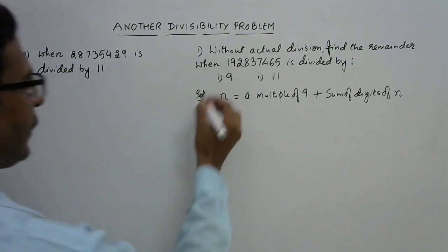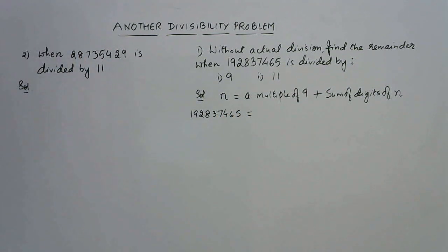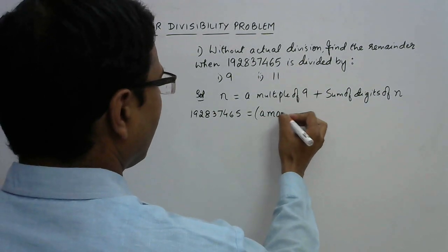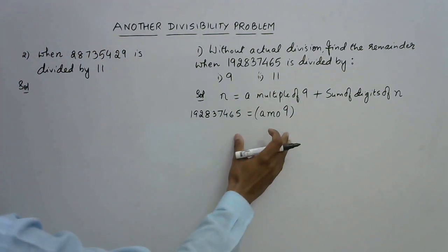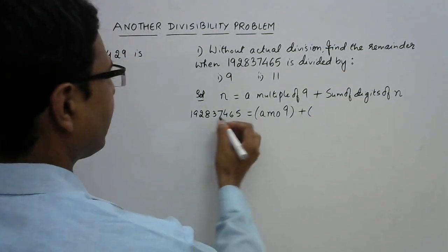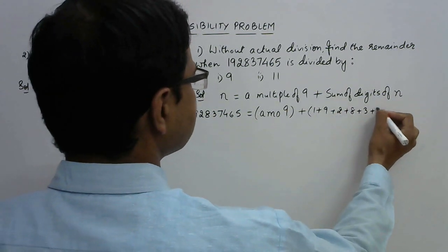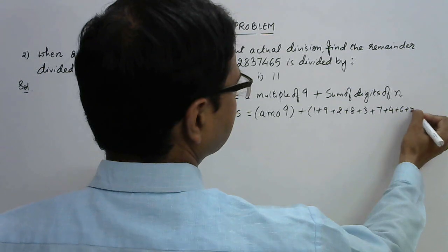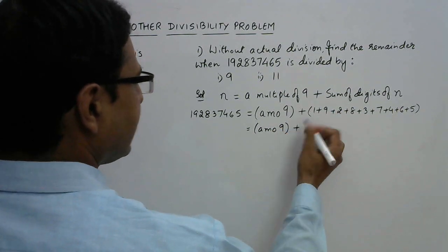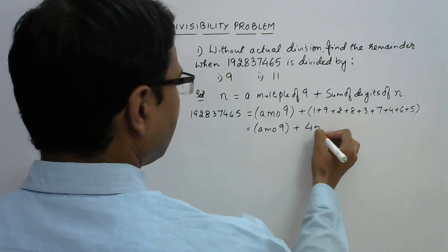Let us see for this case: 192837465 equals a multiple of 9 plus the sum of digits. I will write 'a multiple of 9' in brackets to avoid writing it all over again. Now let us find the sum of digits: 1 + 9 + 2 + 8 + 3 + 7 + 4 + 6 + 5. So this is a multiple of 9 plus — adding these gives 10, 20, 30, 40, 45.